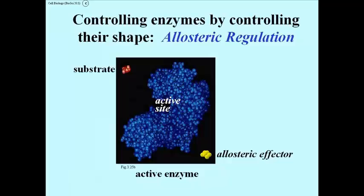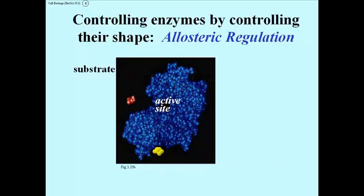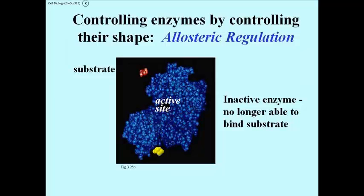We control enzymes by controlling their shape, by allosteric regulation as indicated earlier. Here we have the enzyme and substrate, and we have an allosteric effector, which is going to bind to the enzyme at a site other than the active site, but it's going to cause a change in shape at the active site, which prevents the substrate from even attaching to the enzyme. So the inactive enzyme is no longer able to bind the substrate.